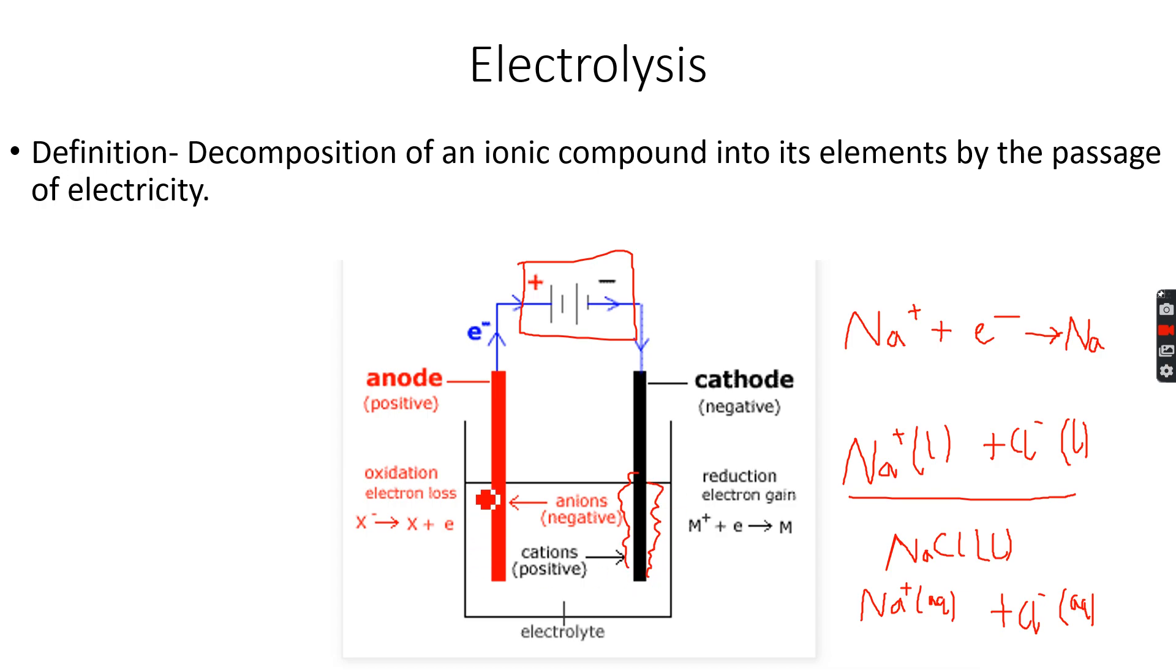Then at the anode, what happens is that there are no electrons, so the sodium ions cannot go here. However, the chloride ions which are negatively charged can deposit their electrons at the anode.